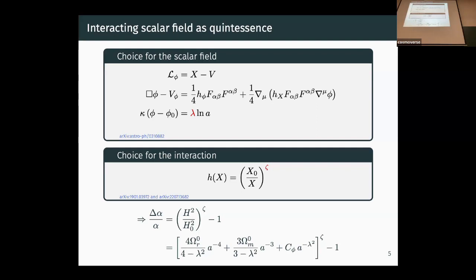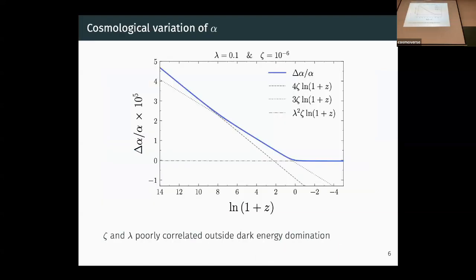Regarding the gauge-kinetic function, we decided to go for a simple power function which was already contemplated in our previous studies coupling dark energy to dark matter. We introduced the constant zeta as being the strength of the coupling between the two sectors. On the basis of these two parameterizations, we derived analytically cosmological variations of alpha. We found an interesting behavior for the variation of alpha which follows different regimes specific to each cosmological epoch.